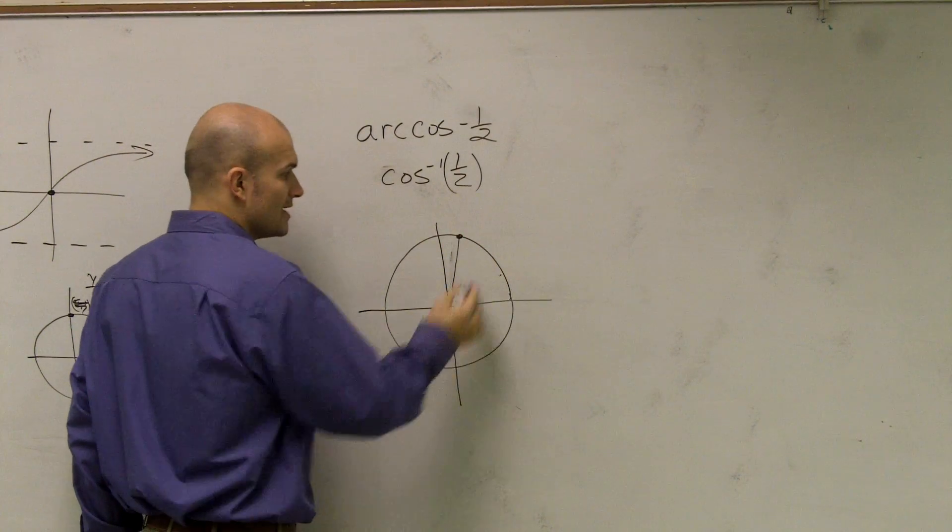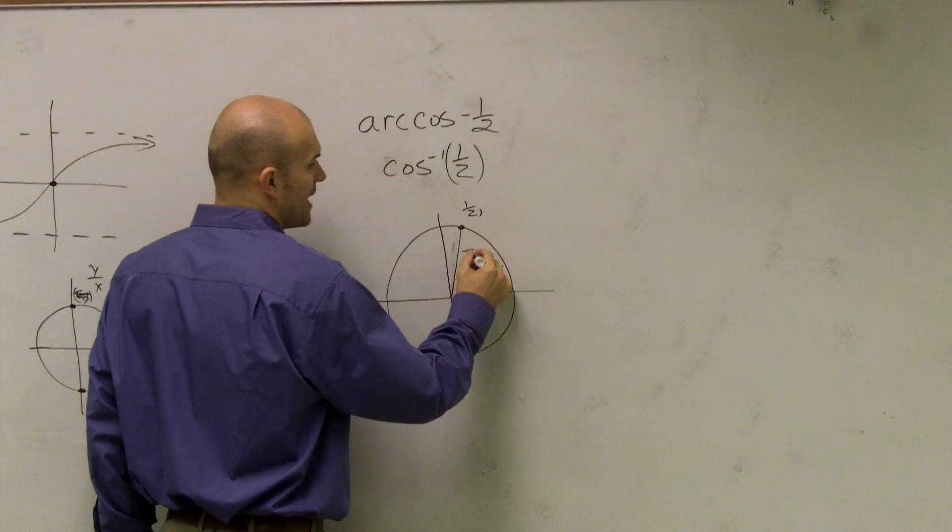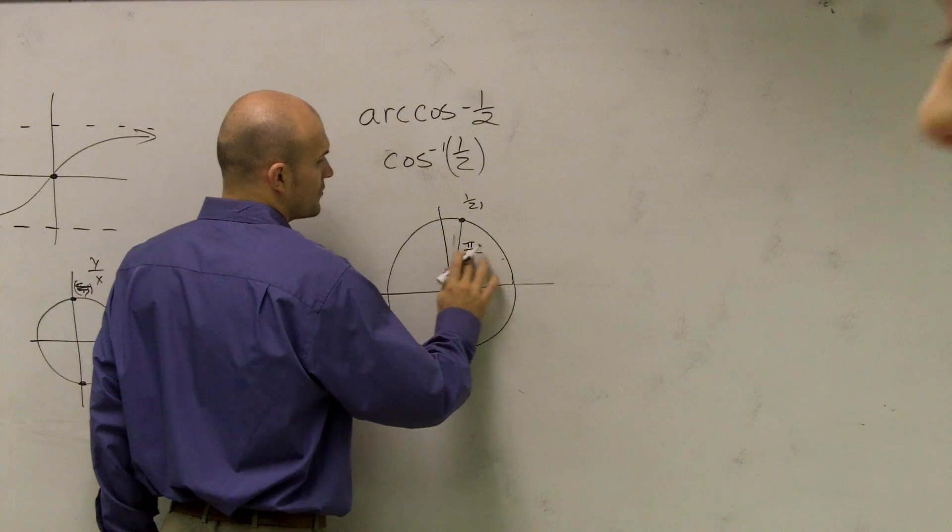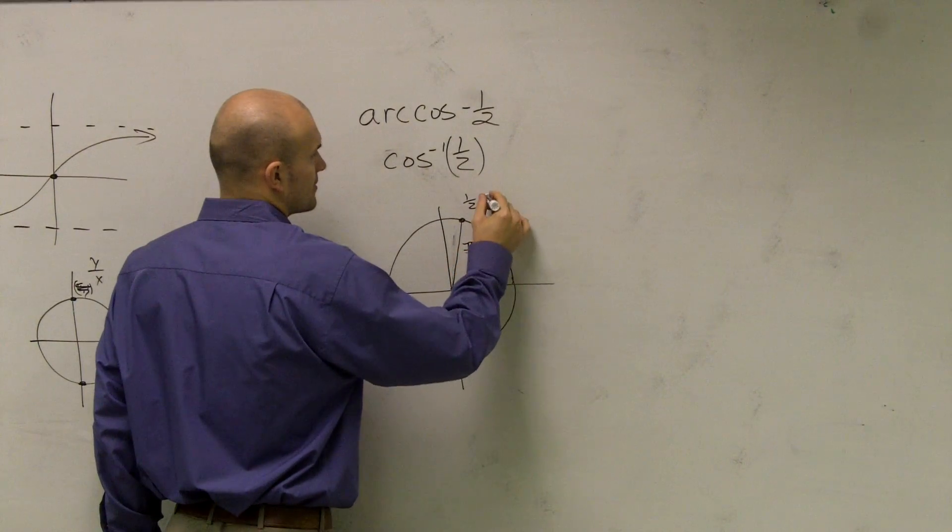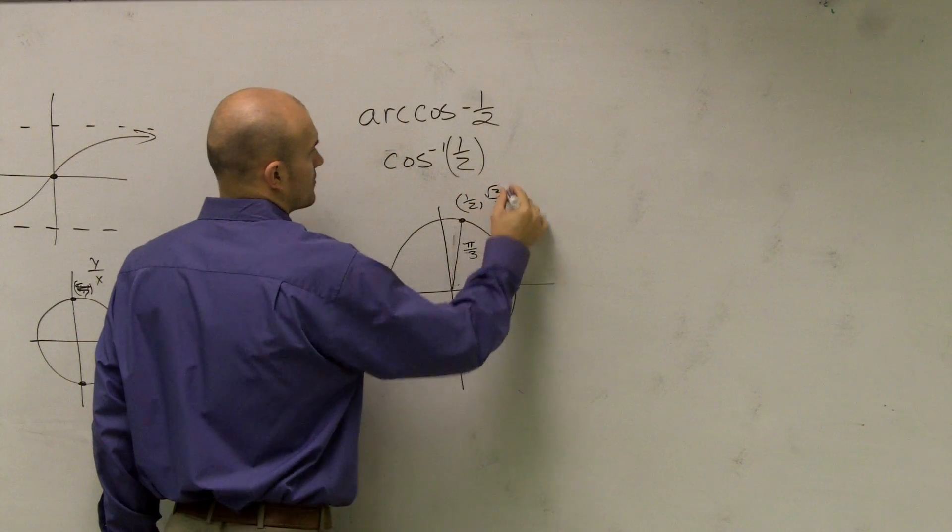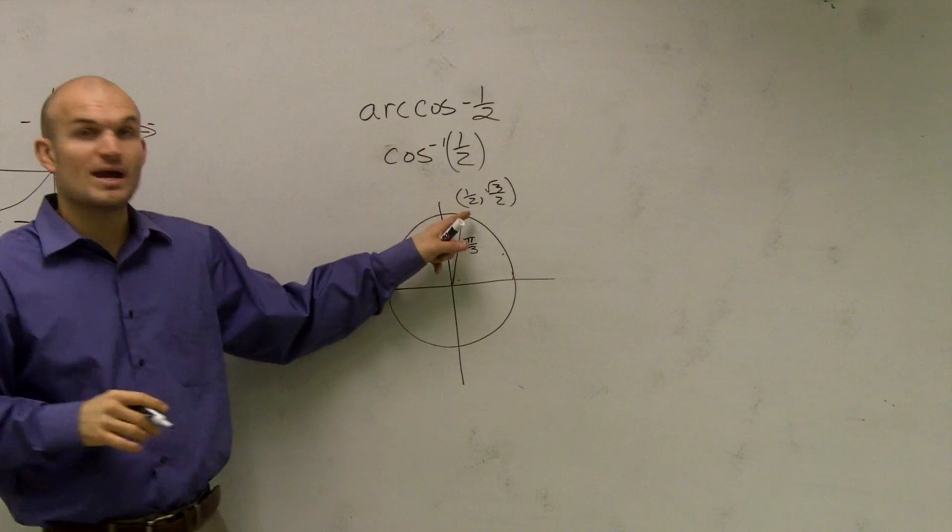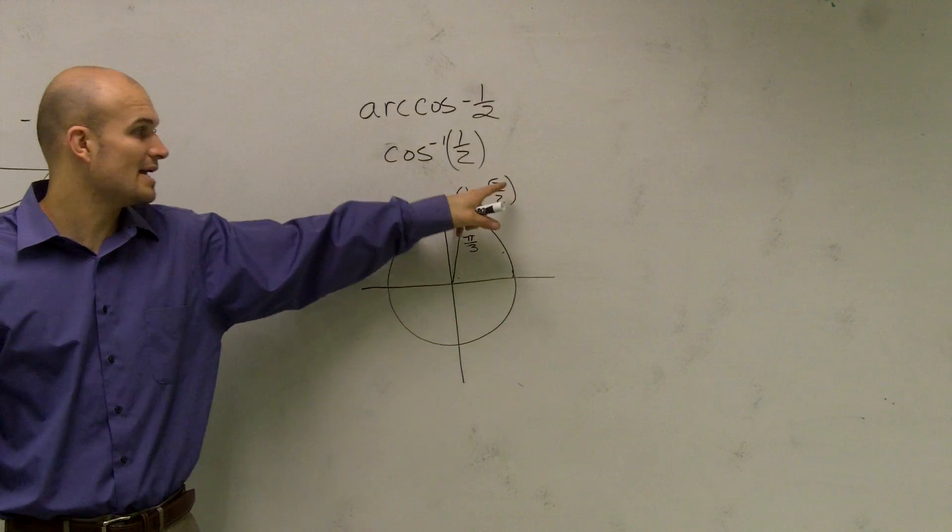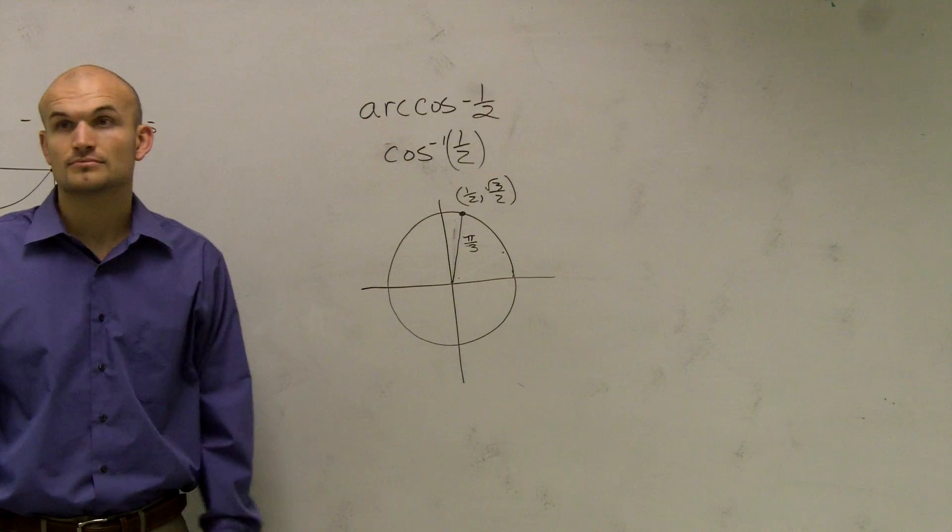The first point I know of, which is what we call pi over 3. Right? At pi over 3, we have a positive 1 half and a positive radical 3 over 2. Okay?